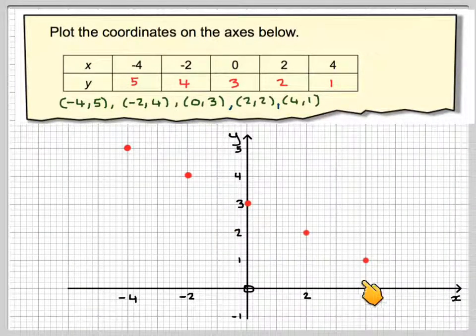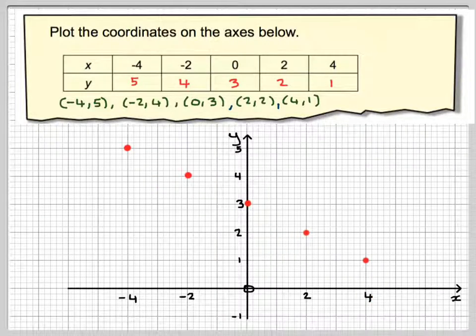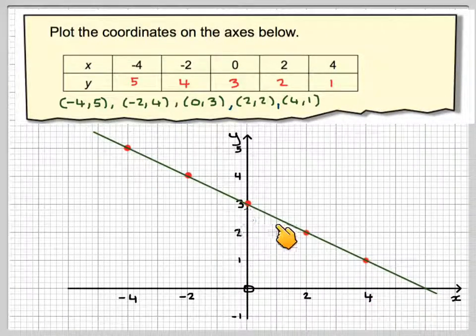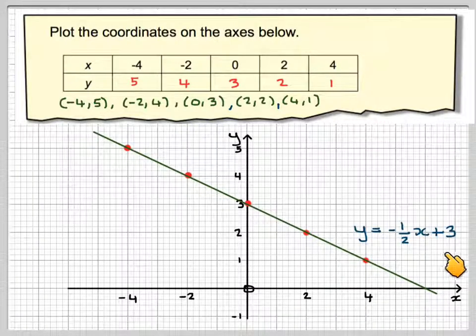We see that all these points lie in a straight line. If you take a ruler and join them up, you will get the straight line here. The equation of that line is y equals minus one-half x plus 3.